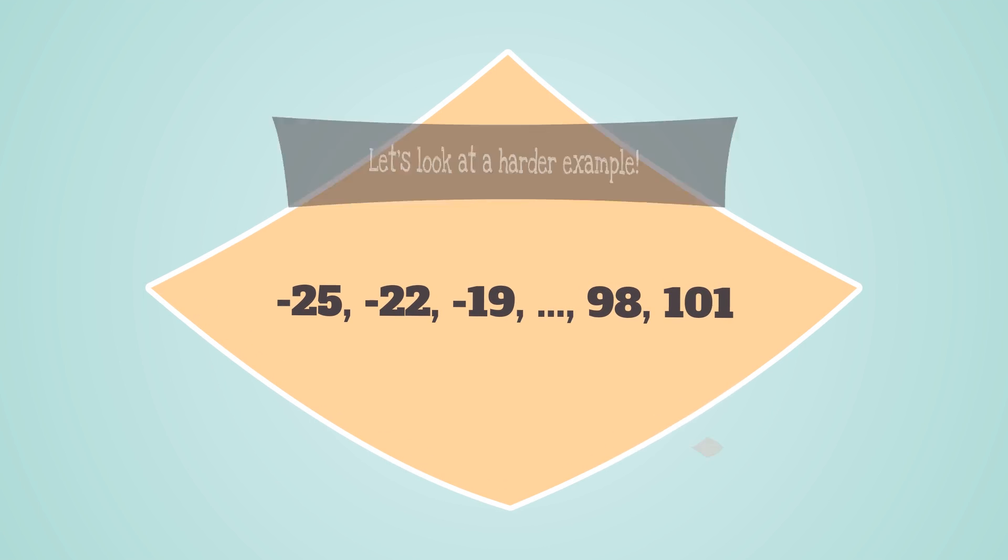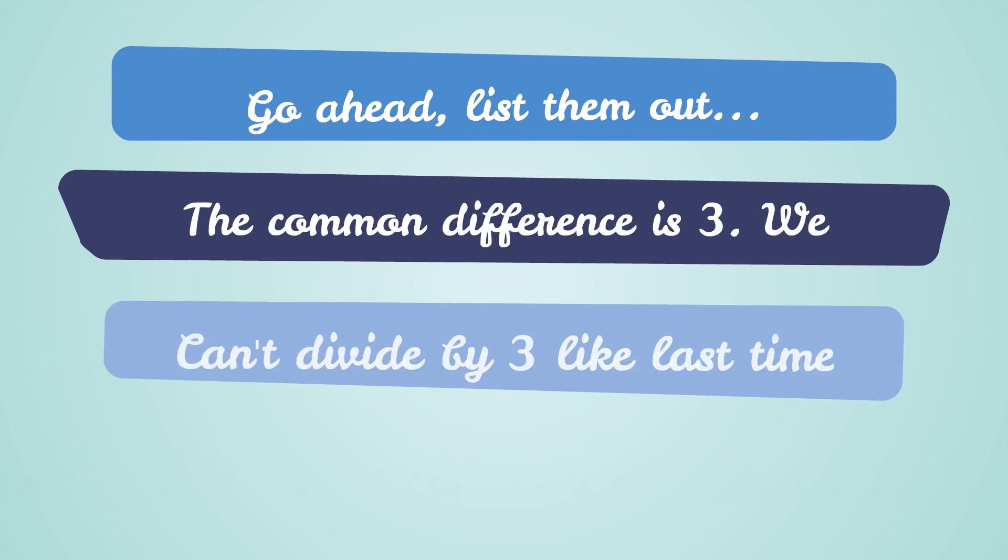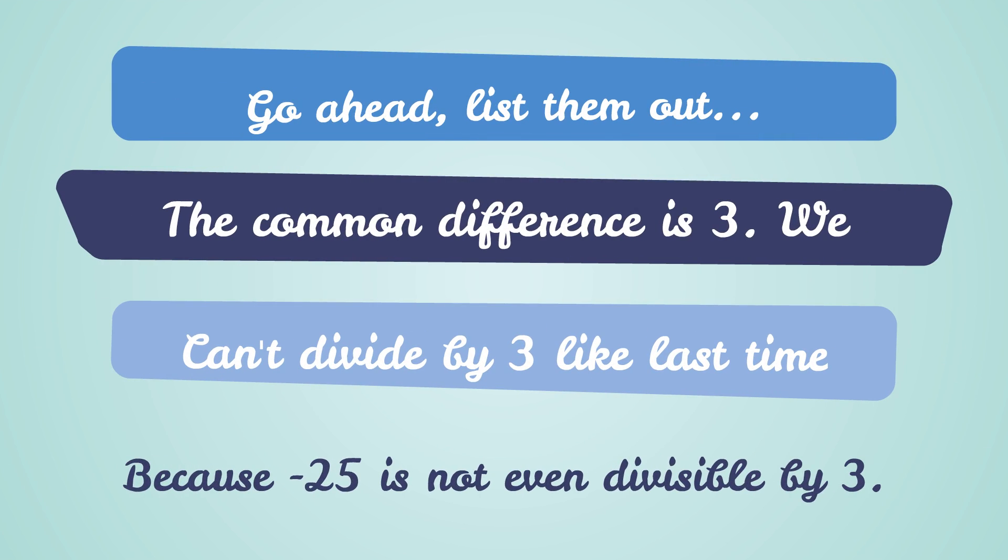Let's look at a harder example. Negative 25, negative 22, negative 19, all the way to 98, and 101. How many terms are in this list? Pause the video if you want more time. Go ahead. You can try listing them all out. It won't work. It will take way too long, you could do it, and you might even make a mistake.